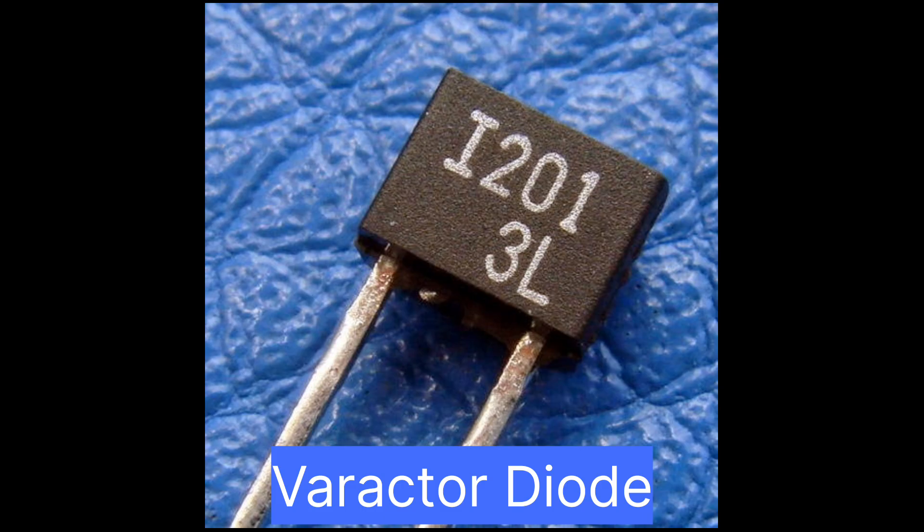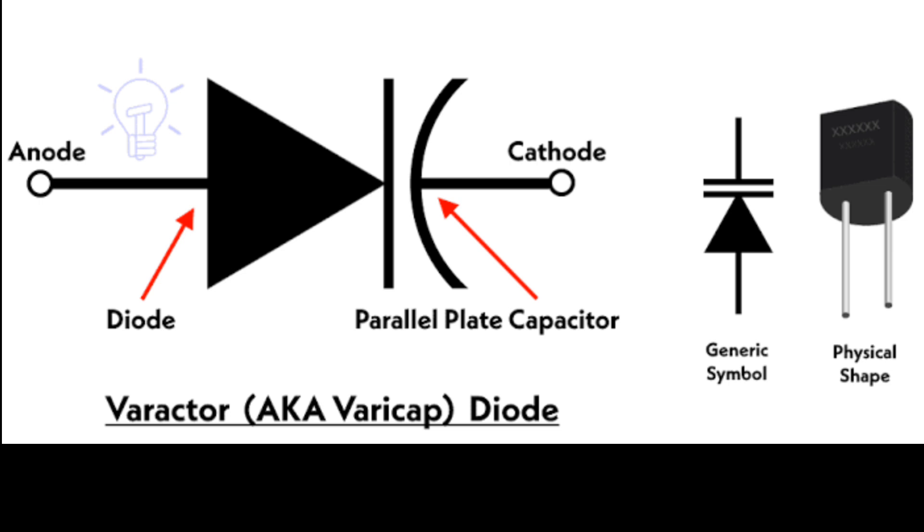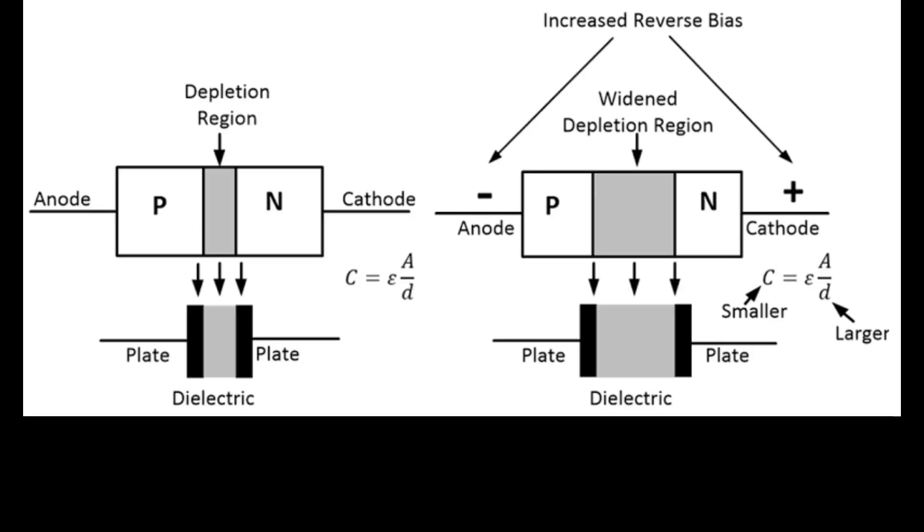Next we have varactor diode. It acts as a variable capacitor when it is reverse biased. It finds application in areas where variable capacitor is required.